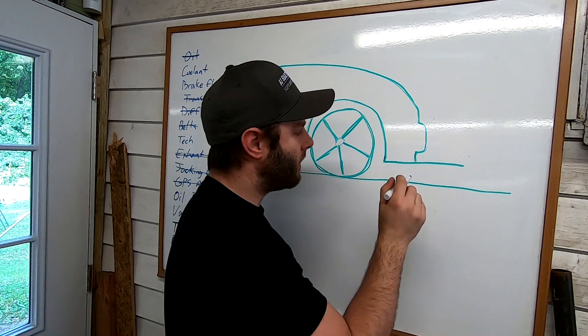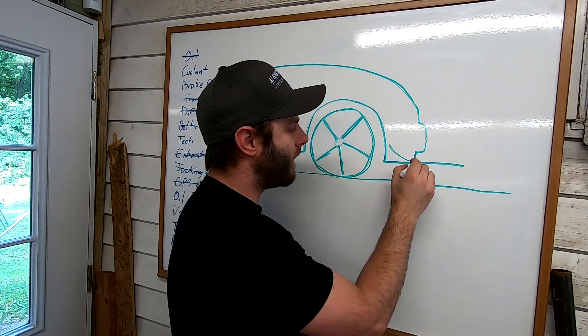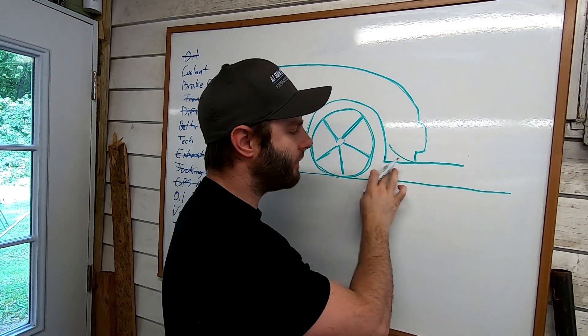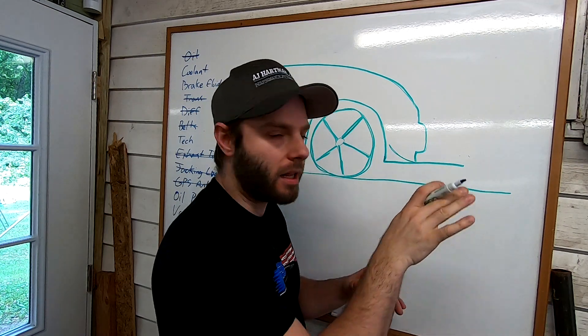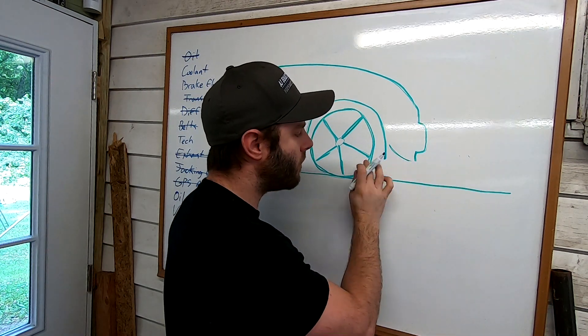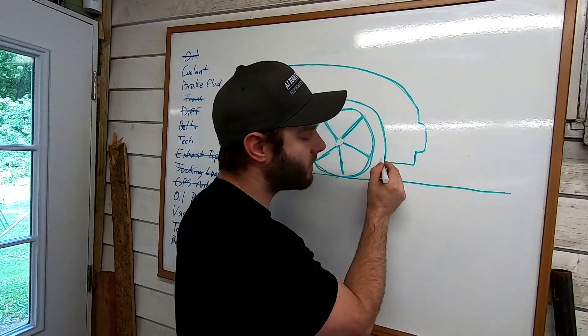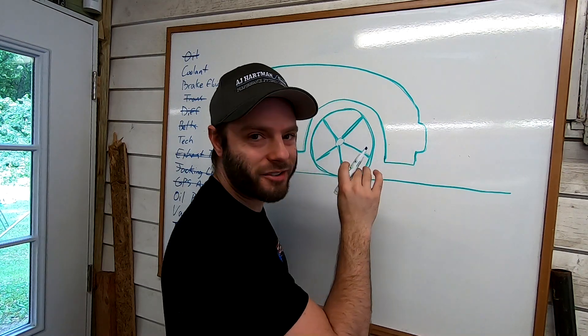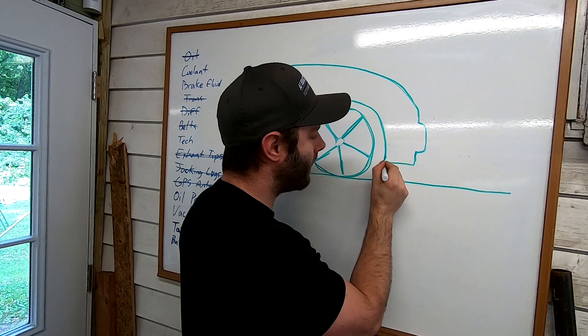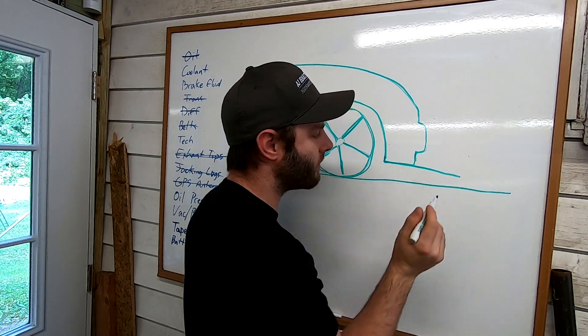We're not taking into account any splitter tunnels or anything like that. A flat splitter needs a little bit of rake to it. So in an ideal situation, you would almost—I'm going to exaggerate a little bit just so it shows up—but you would almost want something like that.